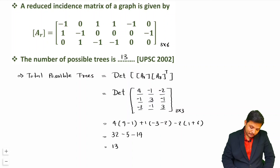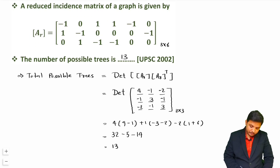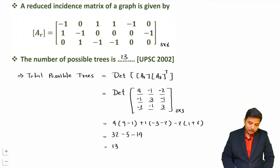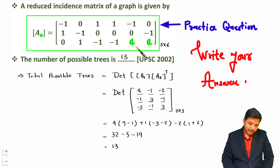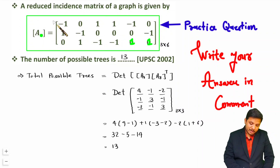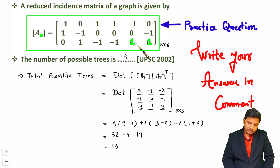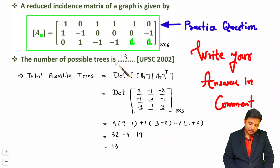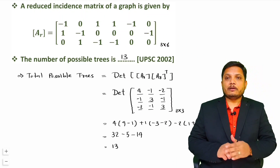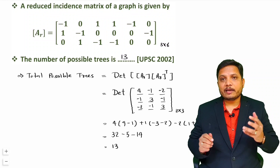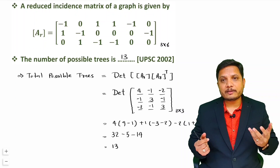So a total of 13 possible trees exist for the given reduced incident matrix. For homework, I will give you a matrix — which may be incident or reduced incident — where I change the values of two coefficients from 1. You need to identify the total number of possible trees and write your answer in the comment box. I hope you have understood how to find trees from an incident matrix.